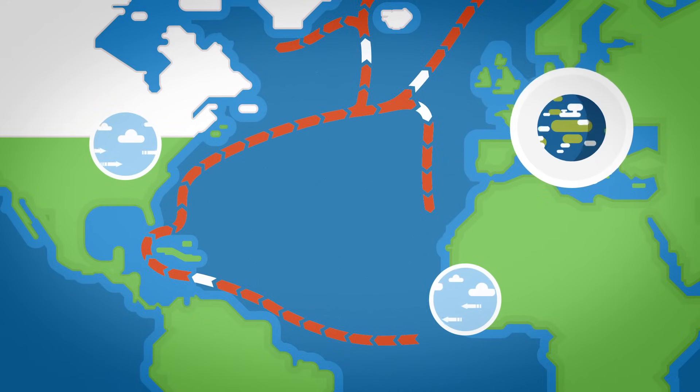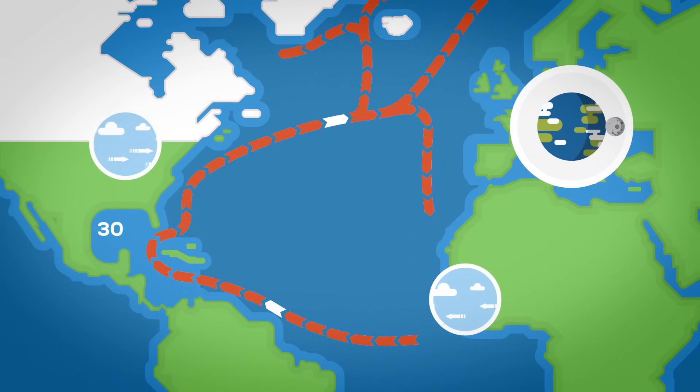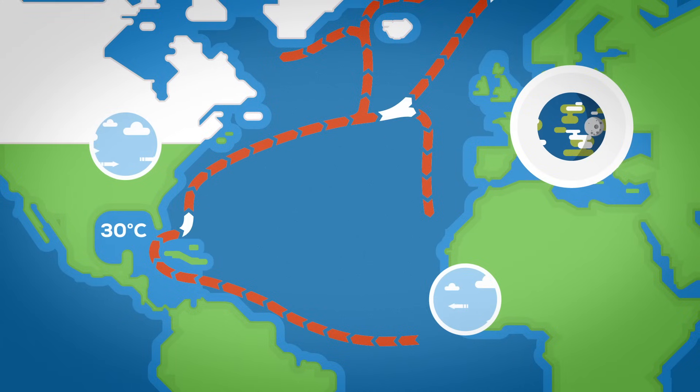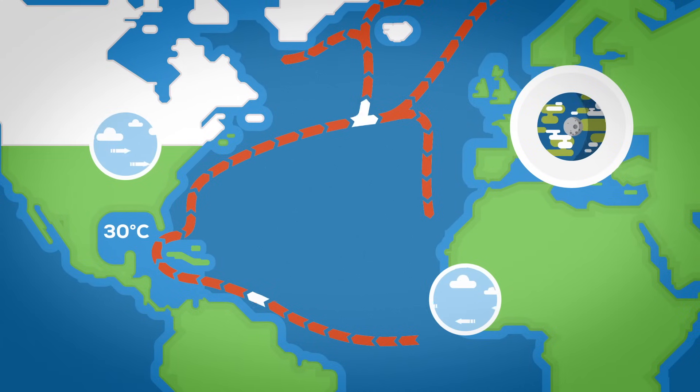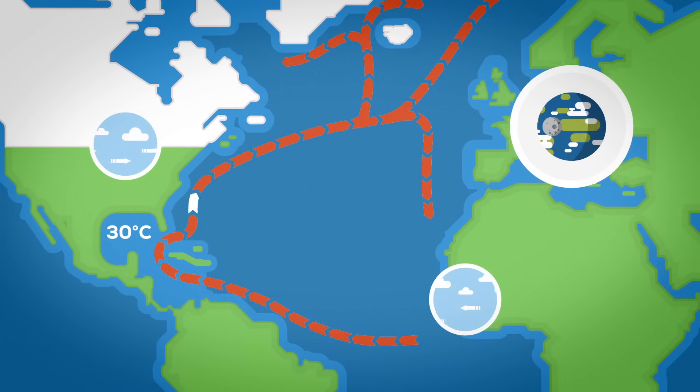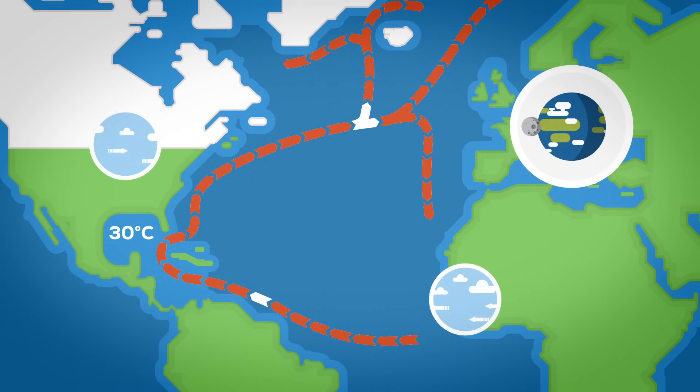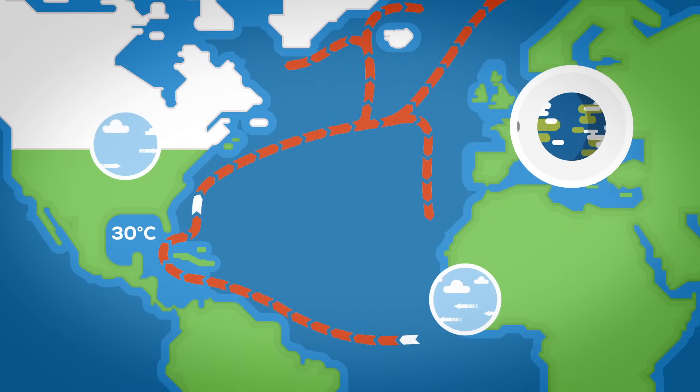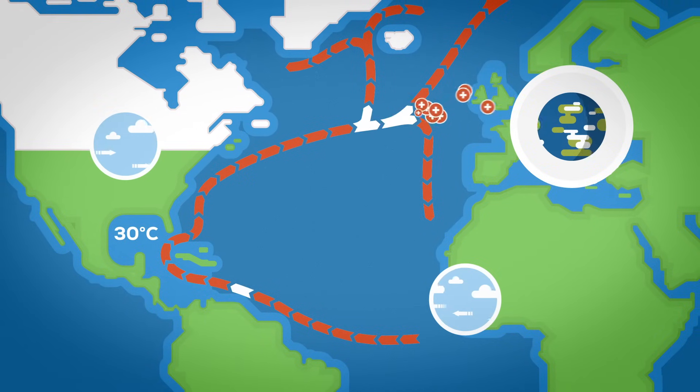The turning of the earth and the west winds then direct the Gulf Stream towards Europe and split it up. One part flows south, another east to the Canary Current and a third part flows north where it releases a lot of heat into the atmosphere as the North Atlantic Current.